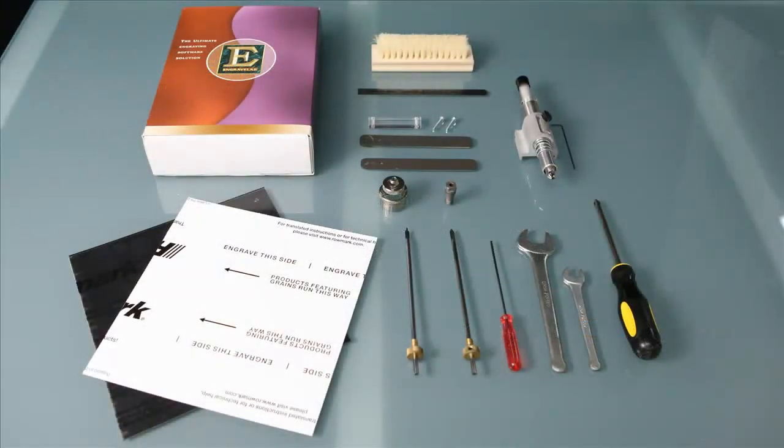To set up the ADA workflow, we'll need the following items which are part of our ADA bundle: our ADA substrate and tactile material, our EngraveLab software, a horsehair brush for cleaning off the engraved material, a ruler, our spindle cover offset hardware.